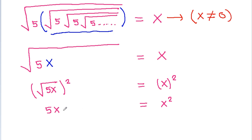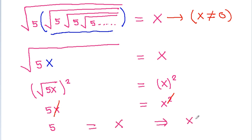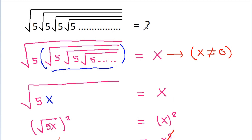So we can easily cancel x from both sides. Therefore 5 will be equal to x, or x is equal to 5. So the answer is equal to 5.